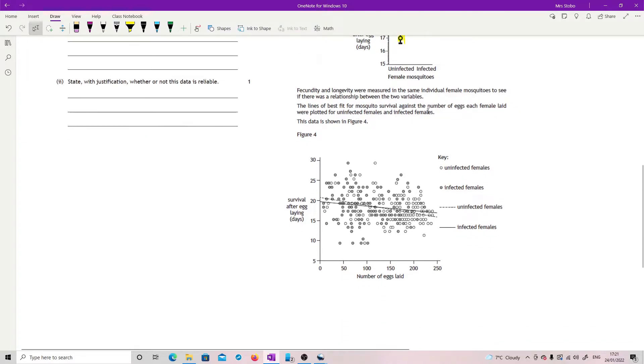Lines of best fit for mosquito survival against the number of eggs each female laid were plotted for uninfected females and infected. We've got our big huge scatter plot here and I'm very glad that the computers put the line in.